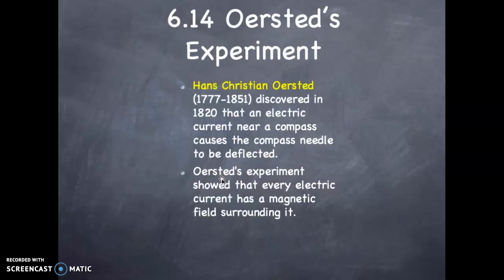Oersted's experiment: Hans Christian Oersted discovered in 1820 that an electrical current near a compass caused the compass needle to be deflected. Oersted's experiment showed that every electrical current has a magnetic field surrounding it. That is part of the reason why this subject is called electricity and magnetism. Before Oersted's experiment, we thought the two were separate, magnetism on the one hand, electricity on the other. But now we understand that if you have an electrical phenomenon, magnetism can result and vice versa.